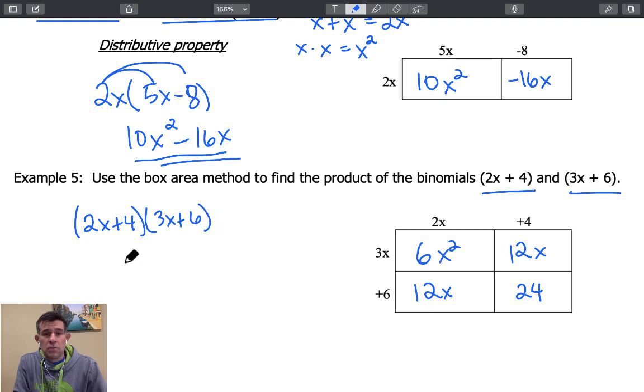So the final expression that represents this area and represents the product of 2x plus 4 times 3x plus 6 is equal to the expression 6x squared plus 24x plus 24.